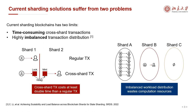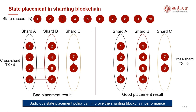Cross-shard transactions hurt multi-chain performance because they need two separate transactions, one by one, to complete, which doubles the processing time. At the same time, the imbalanced workload wastes idle computation resources. In the context of blockchain, state refers to the current status of an account. As each shard contains a portion of the whole blockchain state, the placement result of the state could influence the ratio of cross-shard transactions and workload distribution. As seen in the example, state placement is essential to improve the system performance of the sharding blockchain.